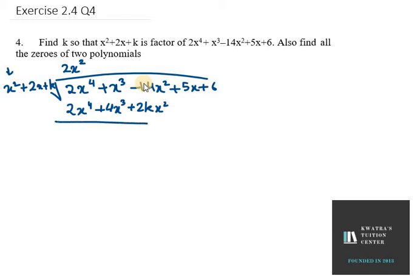Now we need to subtract the terms. x³ minus 4x³ gives minus 3x³. Here we have minus 14x² minus 2kx², so we write both these terms. Then we bring 5x and 6 down to the bottom.